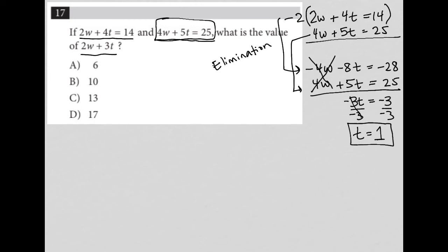So now I need to figure out what w is. So what I do is I go back to one of my original equations. Let's just use the one that I already have kind of circled here. 4w plus 5 times t, but now I know that t is 1, is equal to 25.